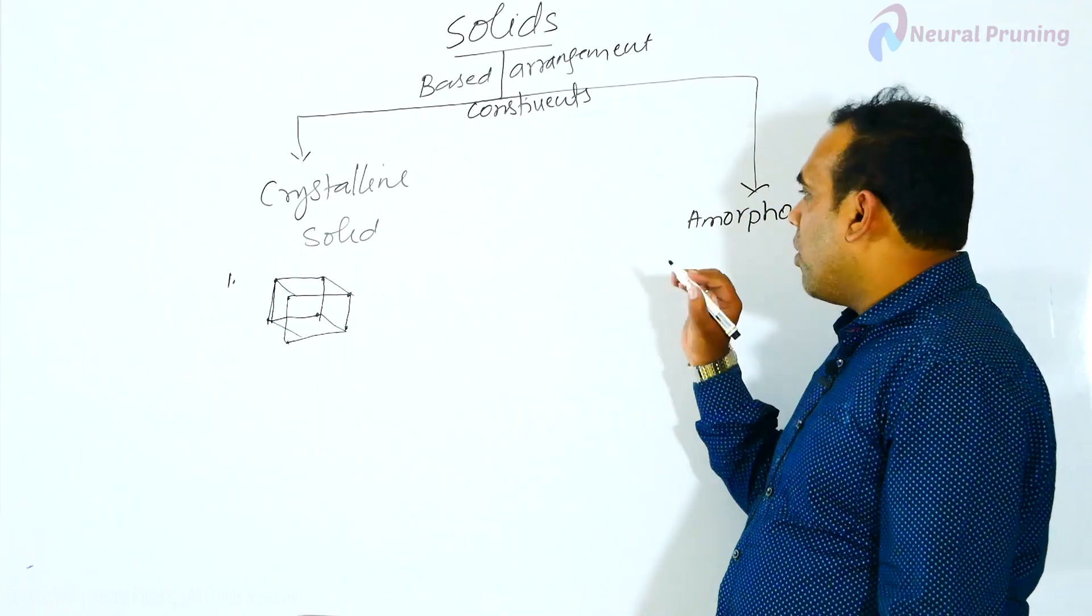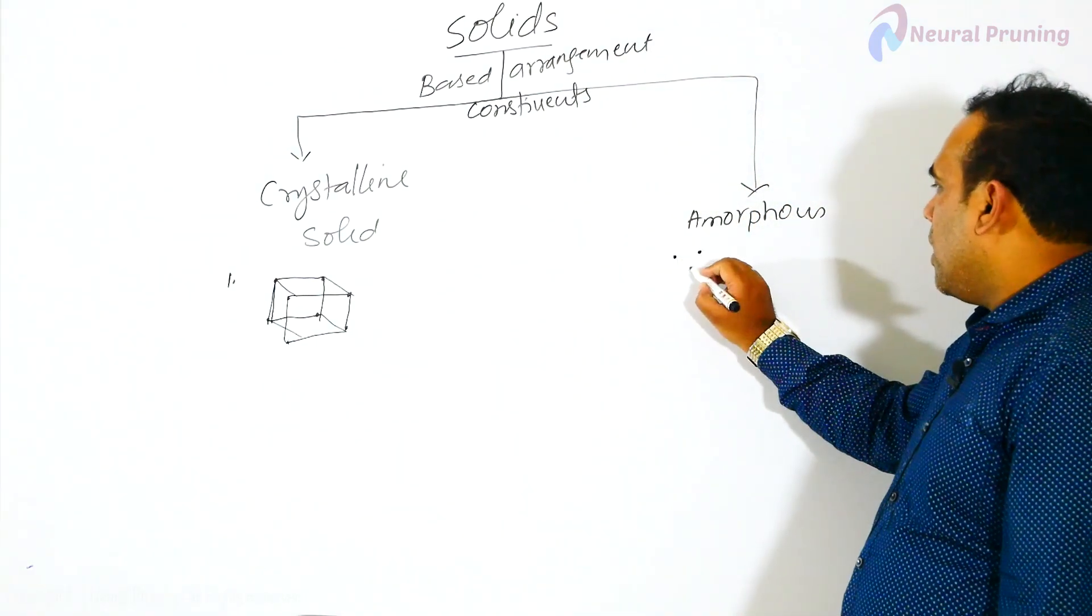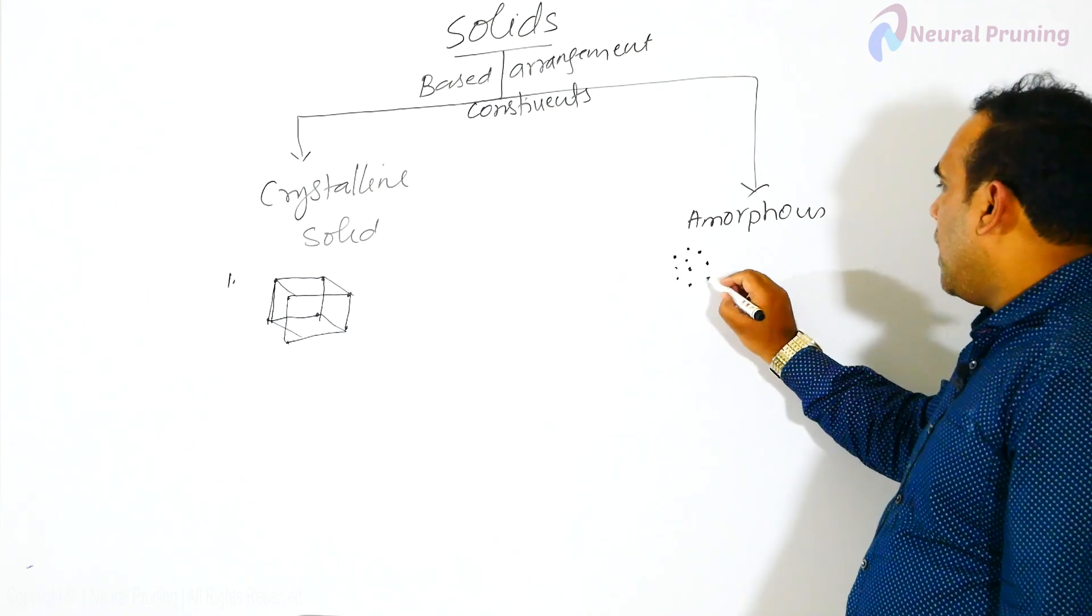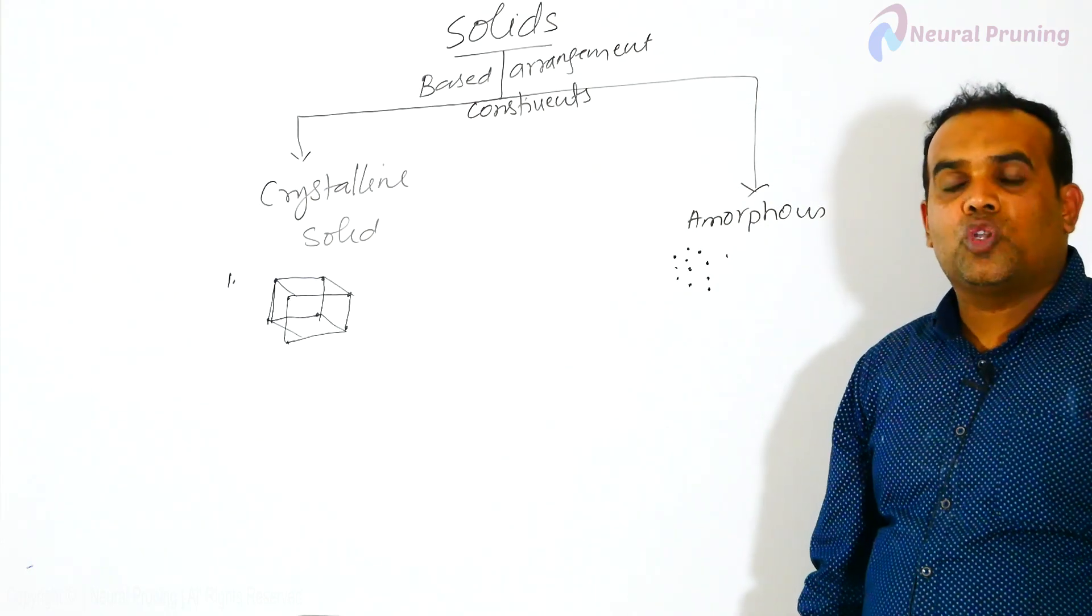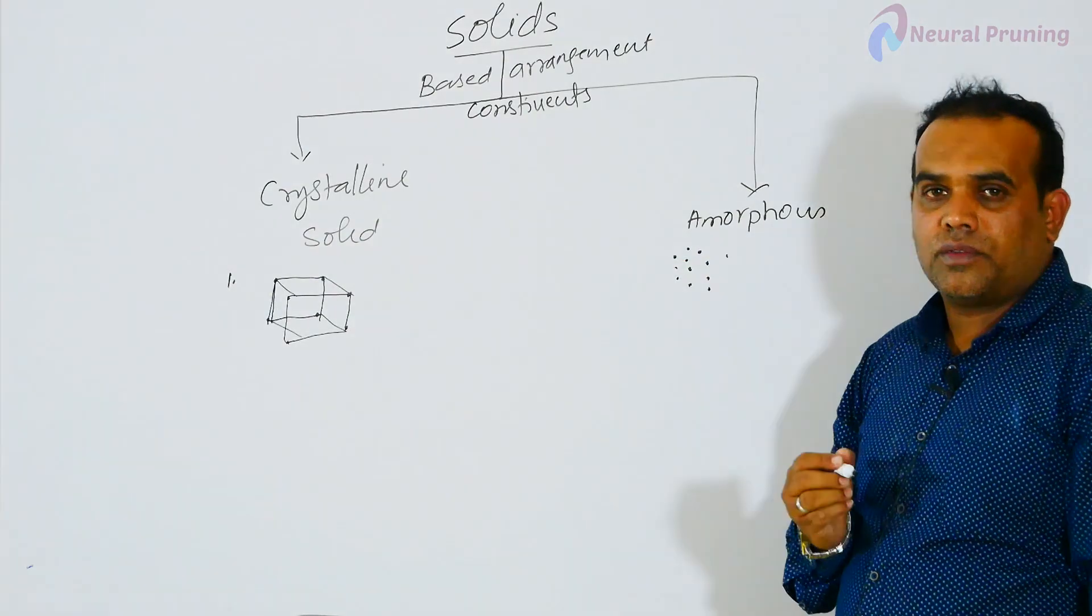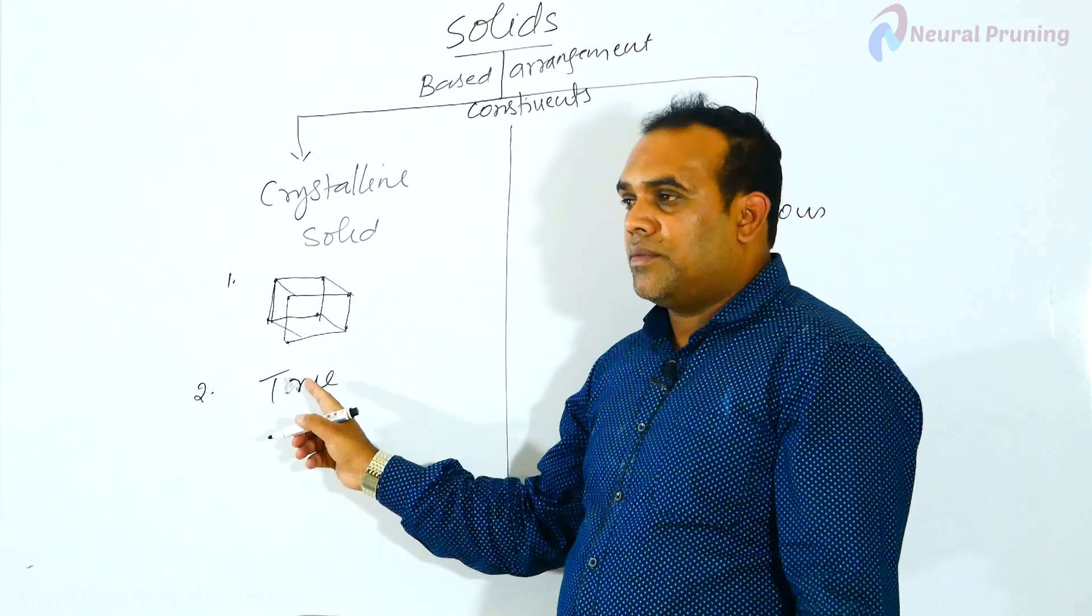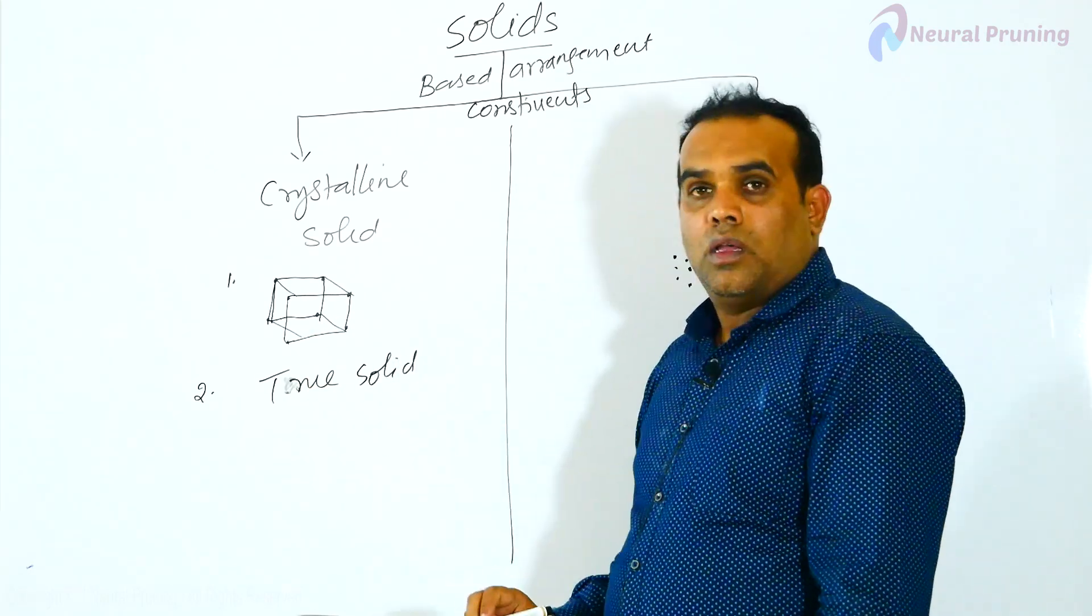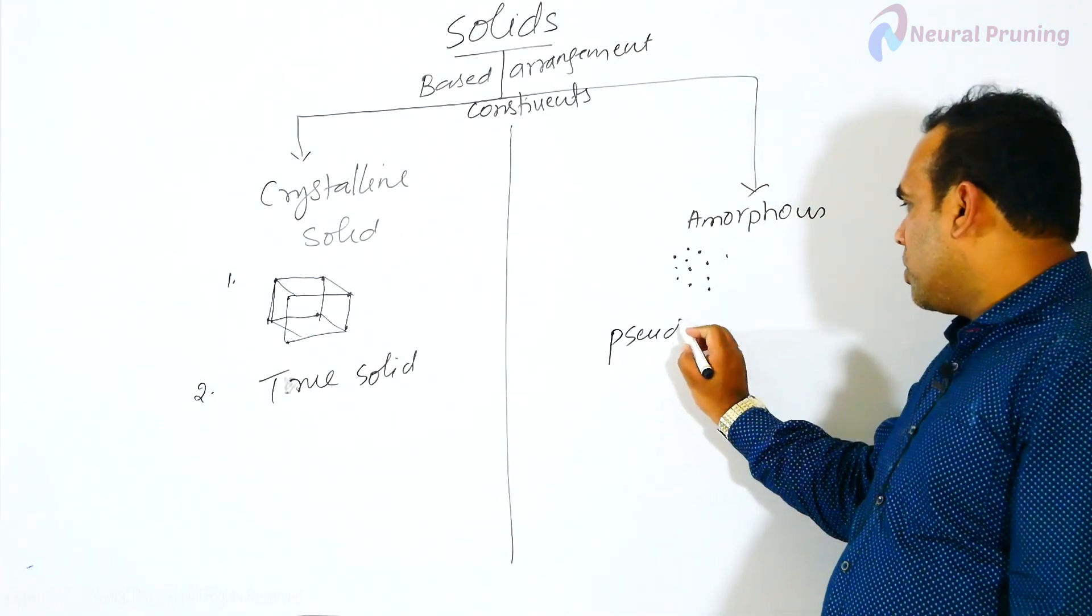What are amorphous? The constituent particles are irregularly arranged and they do not give any definite geometrical shape. Such are called amorphous. Crystalline solids are sometimes referred as true solids, whereas amorphous is referred as pseudosolids.